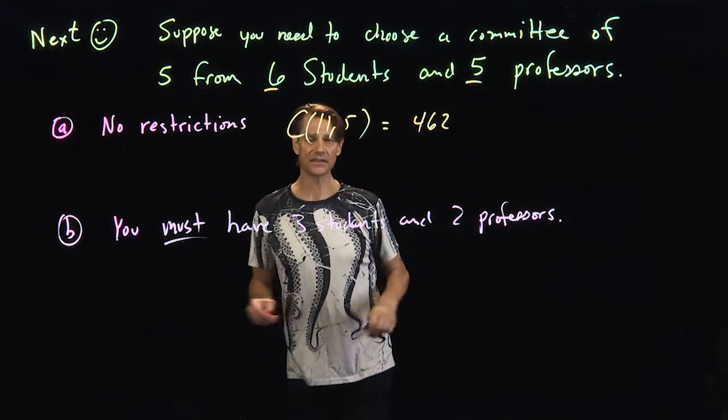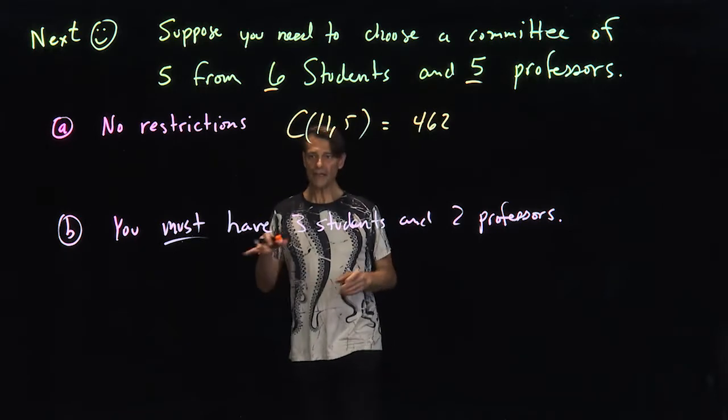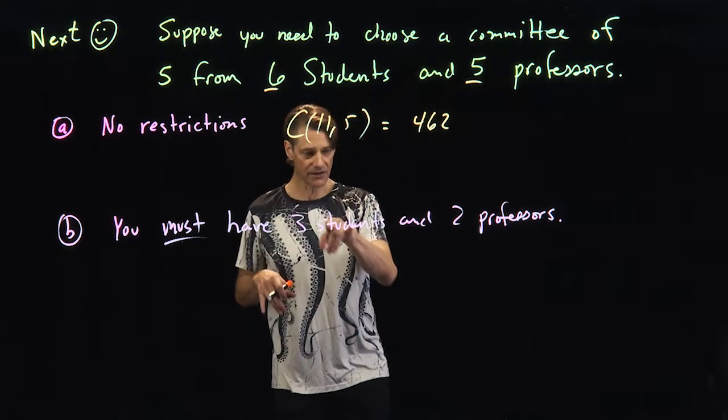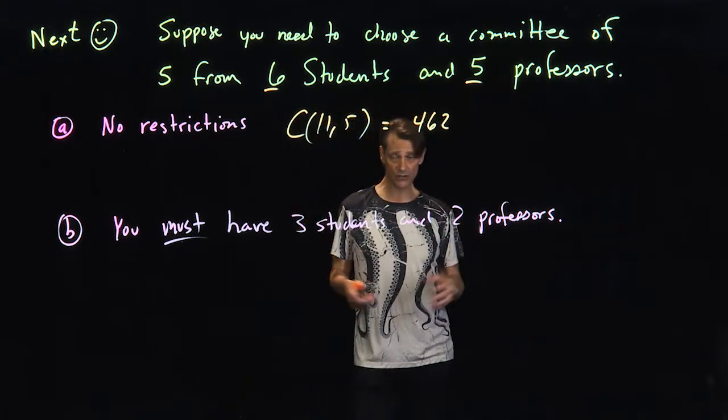And again, this isn't a difficult problem. What about when there are restrictions? What if you must have three students on the committee and two professors? Then how many different ways can you choose these things?